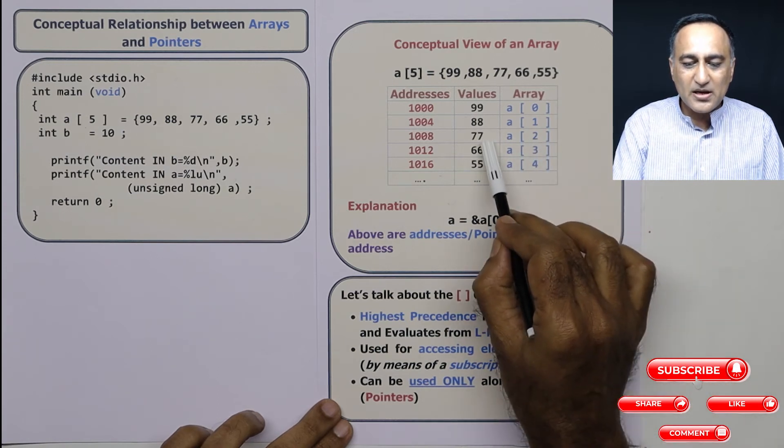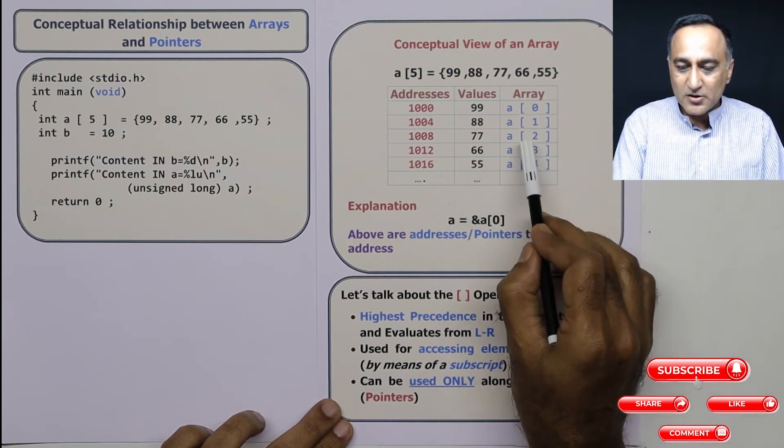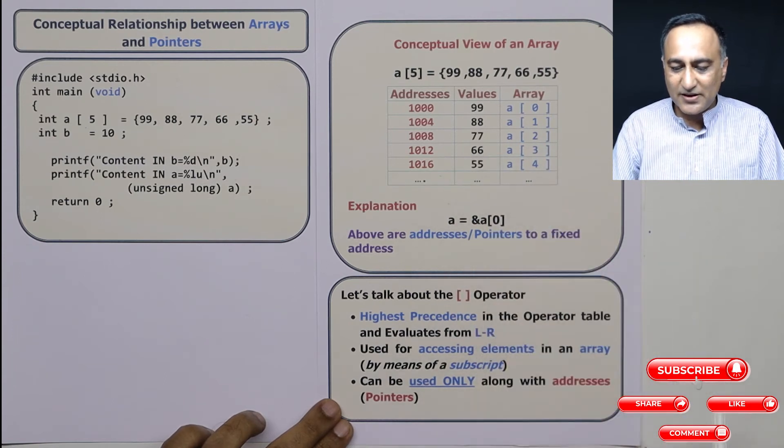The reason we use this particular operator is to access a particular element in an array. So when I say A of 2, I am being able to access 77. So using this square operator, I am able to refer 77.